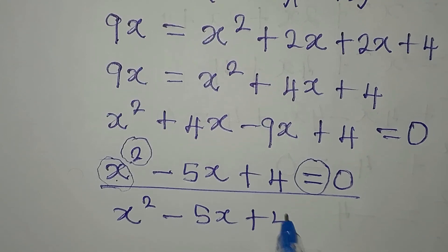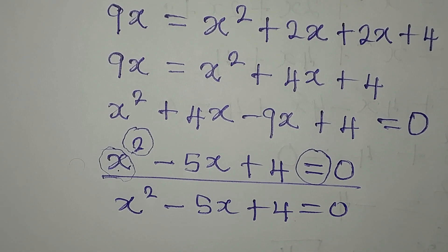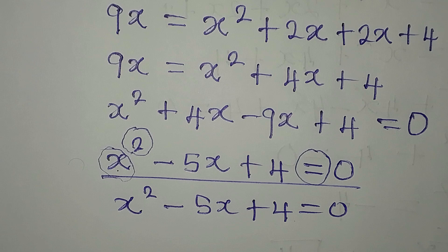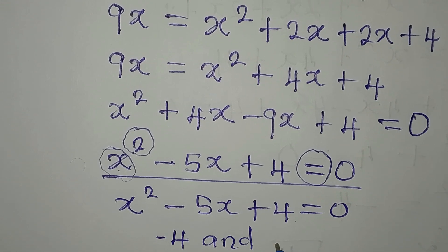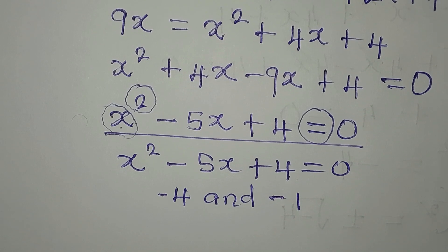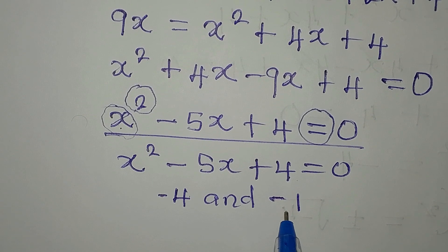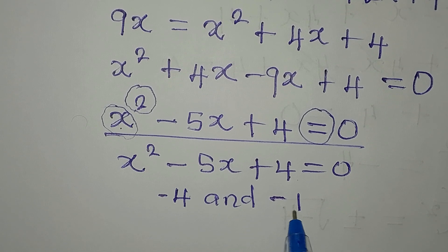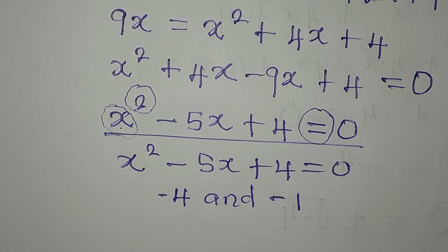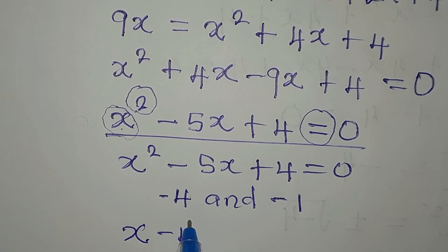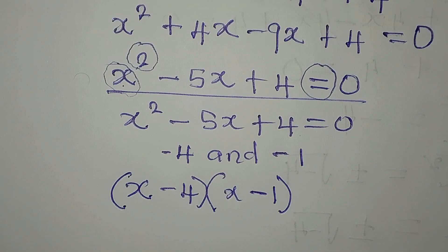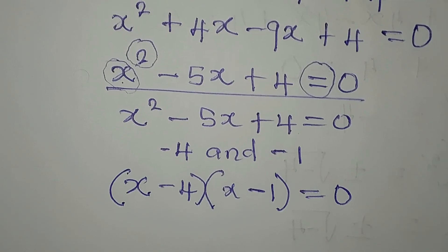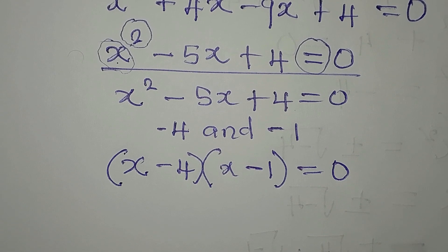We need two numbers that multiply to give plus 4 and add to give minus 5. Those numbers are minus 4 and minus 1, because minus 4 times minus 1 equals plus 4, and minus 4 plus minus 1 equals minus 5. So the two factors are (x minus 4) and (x minus 1), and their product equals 0.